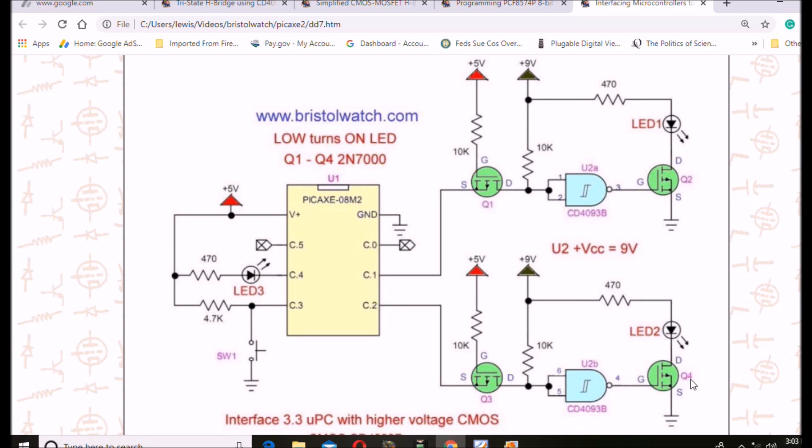In an earlier video, I demonstrated how to use an N-channel MOSFET such as a 2N7000, it's a TO-92 small signal MOSFET transistor, and I used a CD4093 as a CMOS inverter to drive a MOSFET transistor. Now we're going to evolve to a higher level from this basic circuit that allowed me to interface a low voltage microcontroller easily to a higher voltage H-bridge circuit.